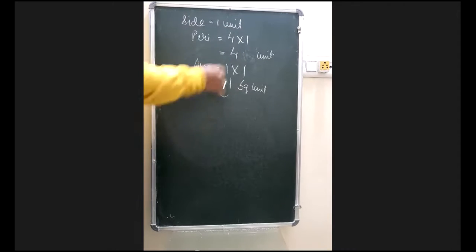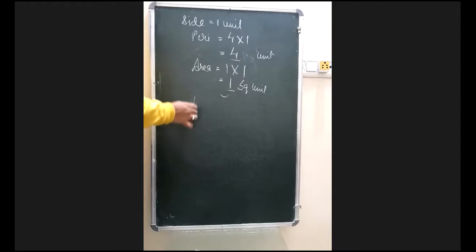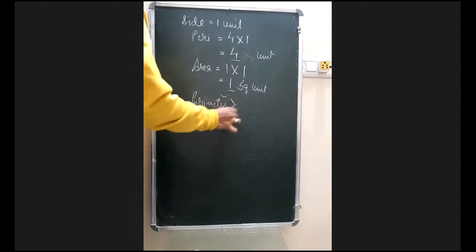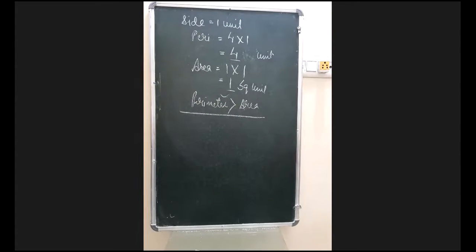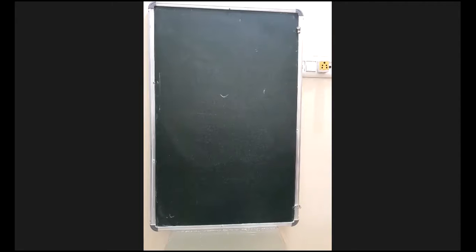Since 4 is greater than 1, the perimeter will be greater than the area in this question. For the next MCQ, the answer is perimeter divided by 4, meaning the side of a square equals its perimeter divided by 4.